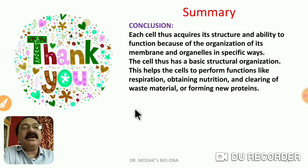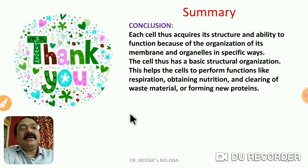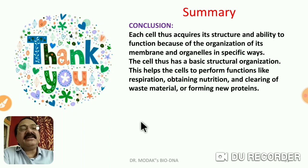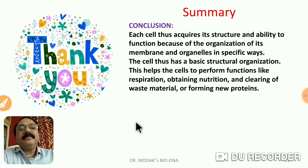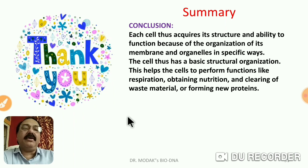With these three cell organelles — mitochondria, plastids/chloroplasts, and vacuoles — we conclude this chapter. Each cell acquires its structure and ability to function because of the organization of its membranes and organelles in specific ways. The cell's basic structural organization helps it perform functions like respiration, obtaining nutrition, clearing waste material, and forming new proteins. Different life processes and functions performed by proteins are actually functions performed at the cell level.